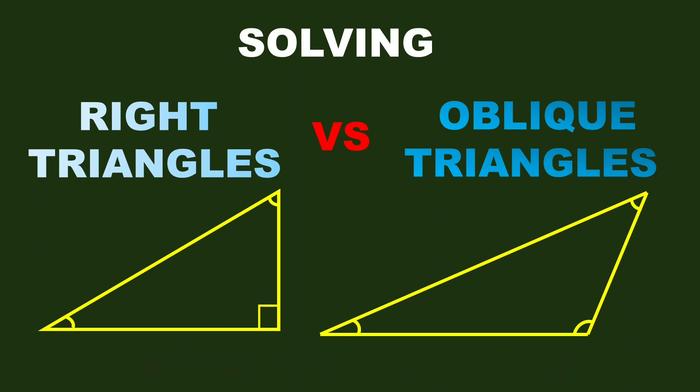The triangle to the left is a right triangle with its given parts: 6, 8, and 10. While the triangle to the right is an oblique triangle with given parts: 8, 10, and 14. How do we solve these two triangles and what is their difference?